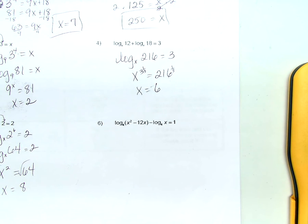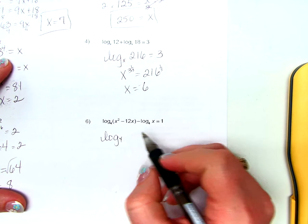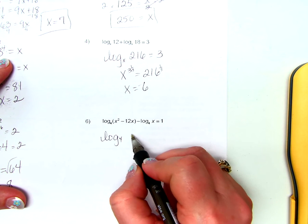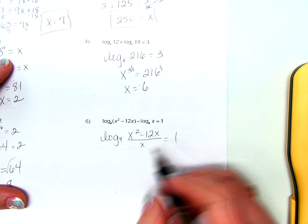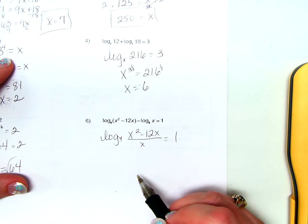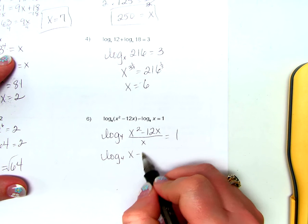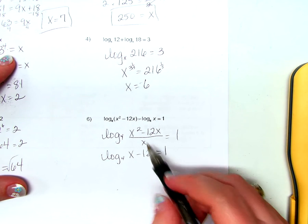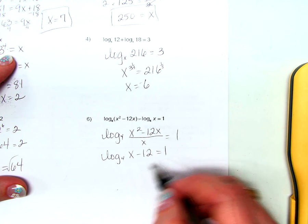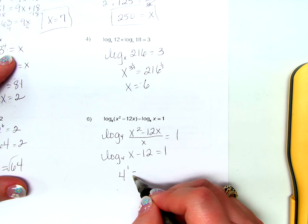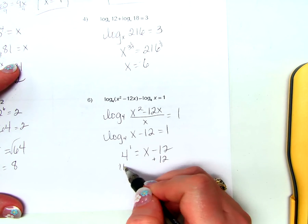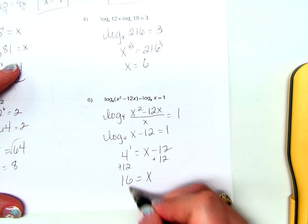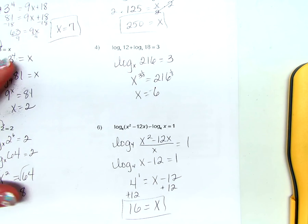Problem 6 looks hardest but isn't. Rewriting as a single expression: x squared minus 12x — subtracting means dividing the arguments. Each term in the numerator is divisible by x, so we get log base 4 of x minus 12 equals 1. In exponential form: 4 to the 1st equals x minus 12. Since 4 to the first is 4, adding 12 to both sides gives x equals 16. Have a great day!